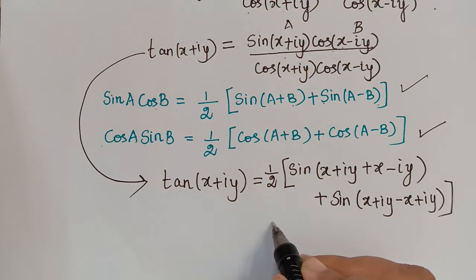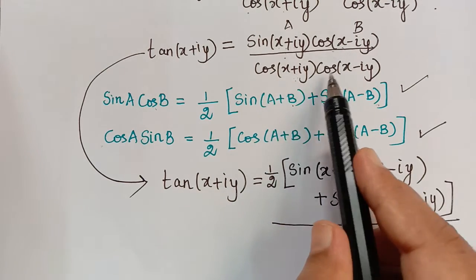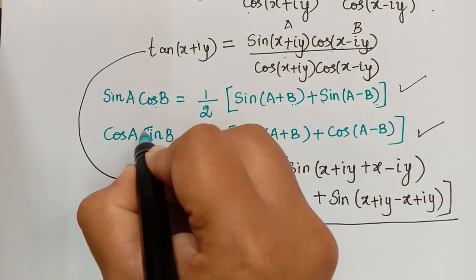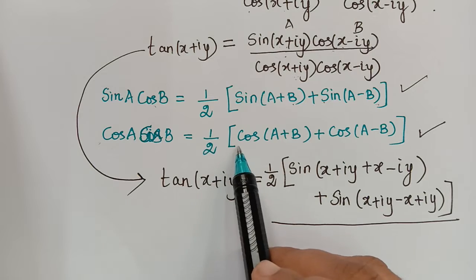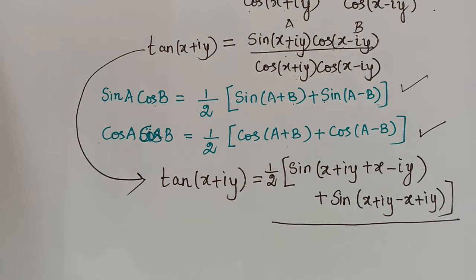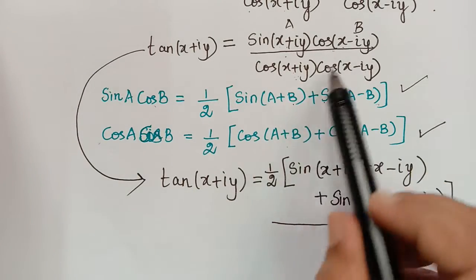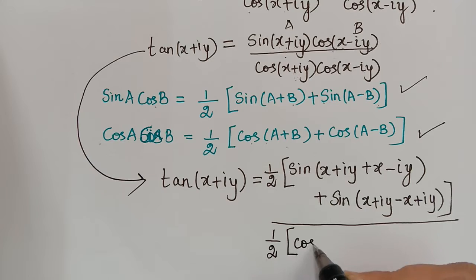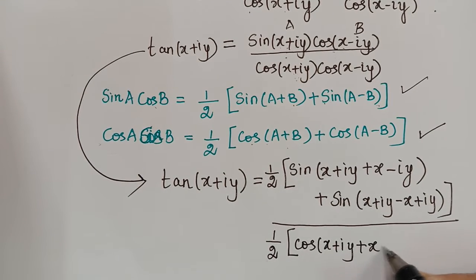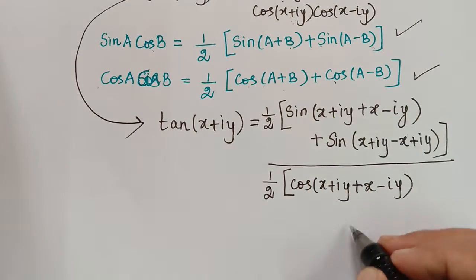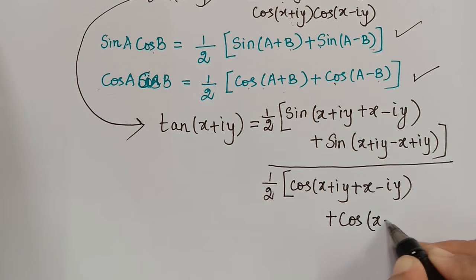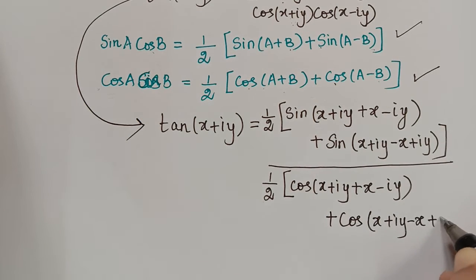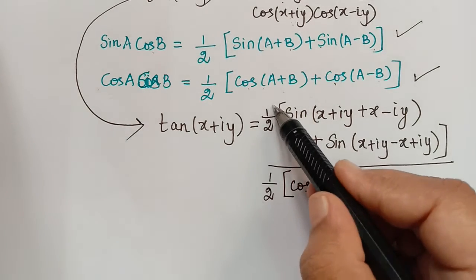For the denominator, cos(a)cos(b) equals one-half of [cos(a + b) + cos(a - b)]. So cos(a + b) gives cos[(x + iy) + (x - iy)], and cos(a - b) gives cos[(x + iy) - (x - iy)], which is cos[-(x - iy) + (x + iy)] = cos(-x + iy + x + iy) = cos(i·2y) after simplification.